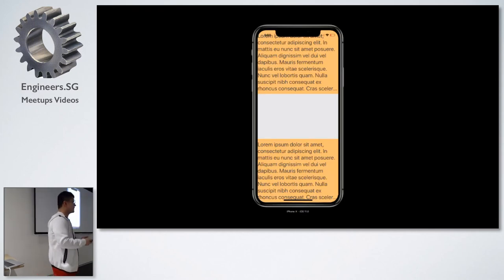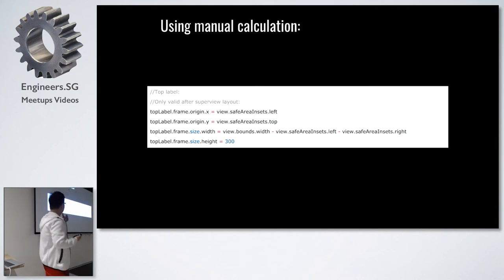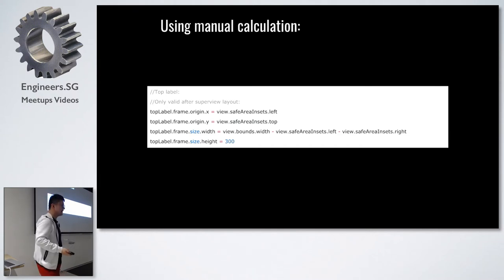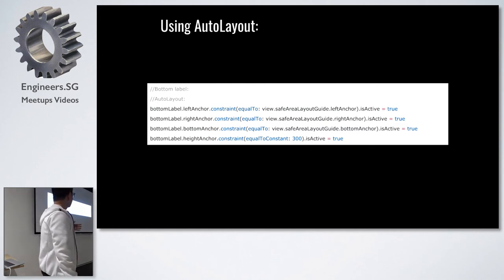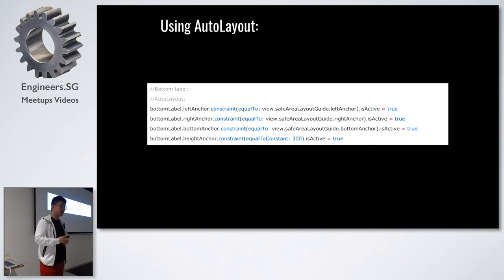Let's look at manual calculation. For the top label, when doing layout we access the view's `safeAreaInsets` property. We attach the x to `safeAreaInsets.left` and y to `safeAreaInsets.top`, then calculate width with respect to the safe area by deducting the insets, and set a fixed height. For Auto Layout it's very simple: the view has a `safeAreaLayoutGuide` property with four anchors — just attach the four anchors of your custom view to the safe area layout guide's anchors and set a fixed height.